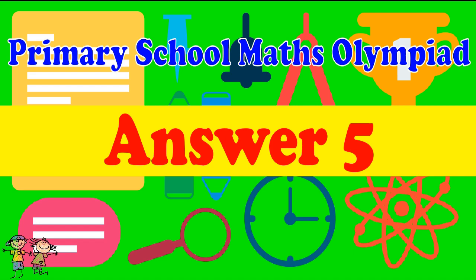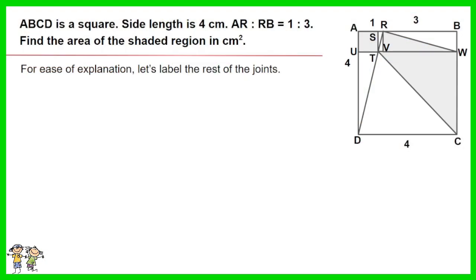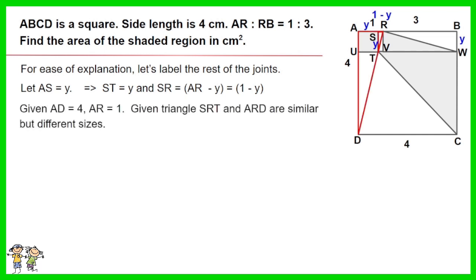Answer for question 5: For ease of understanding, let's label the rest of the joints. Let AS equals Y. Thus ST equals Y and SR equals AR minus Y, equals 1 minus Y. Given AD equals 4, AR equals 1.